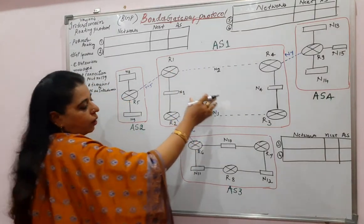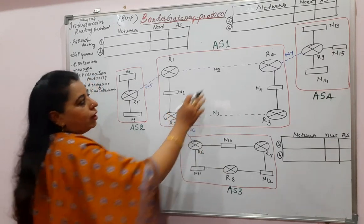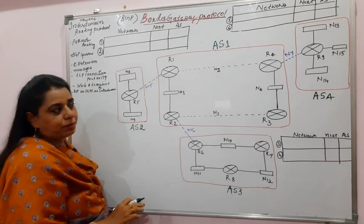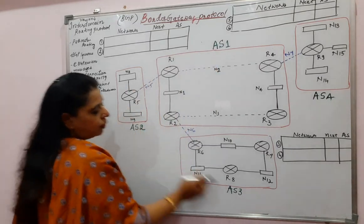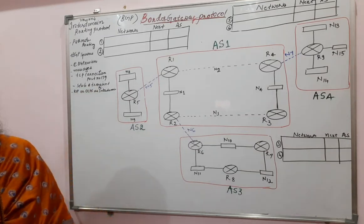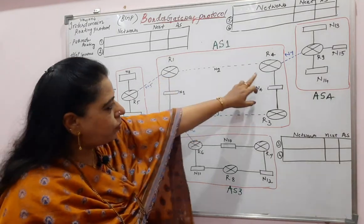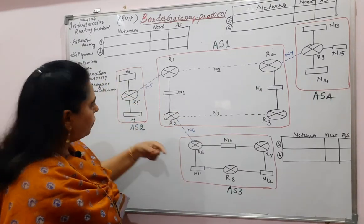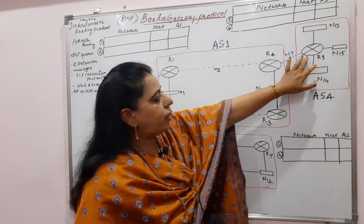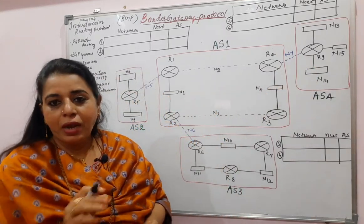Let us look at this diagram. We have taken 4 autonomous systems: AS1, AS2, AS3 and AS4. AS1 has 4 routers, AS2 has 1 router, AS3 has 3 routers, and AS4 has 1 router. Each of these routers is connected to different networks.